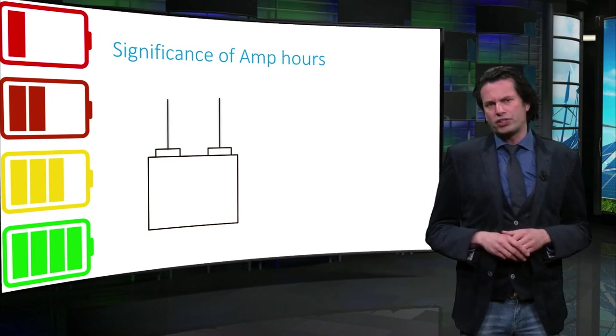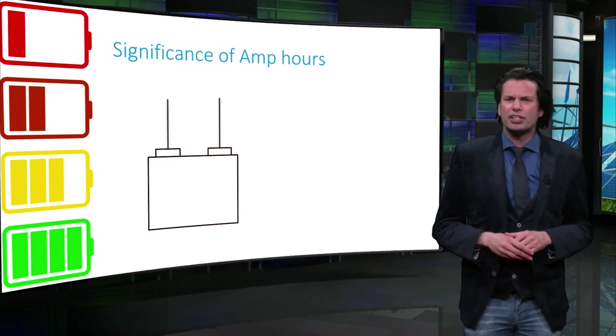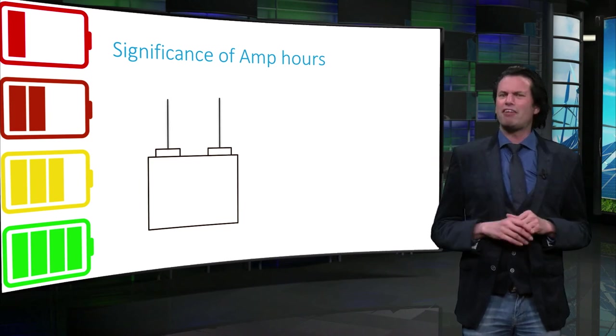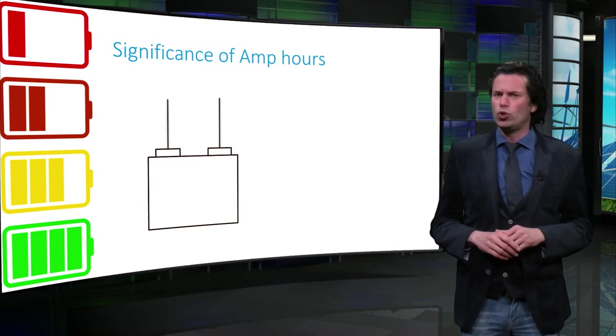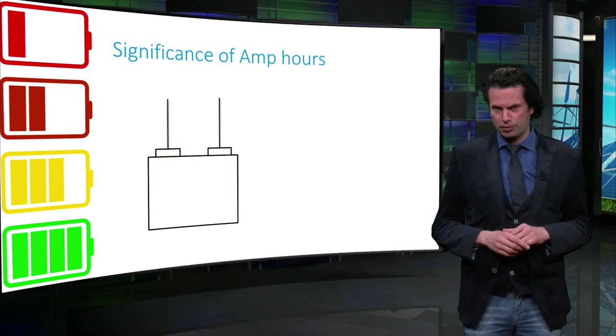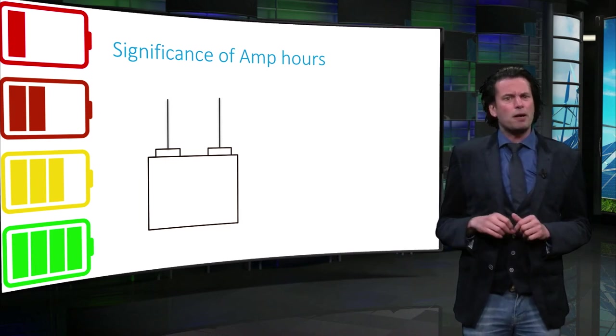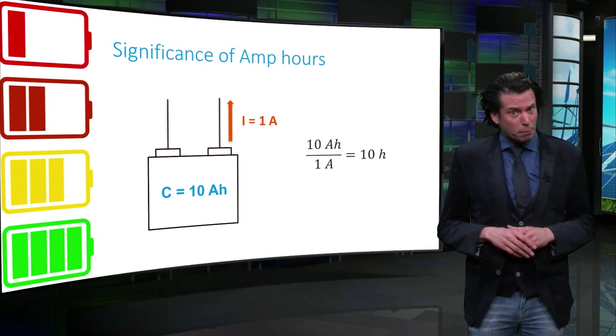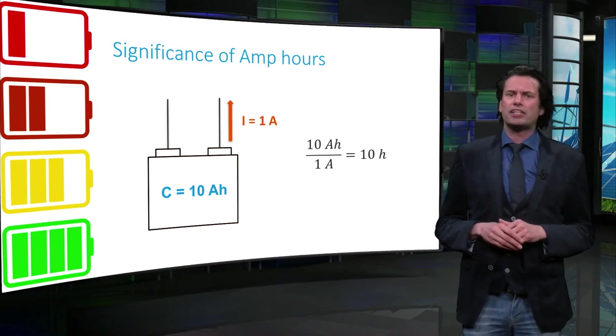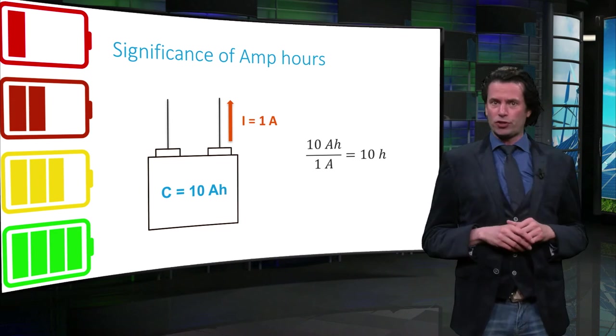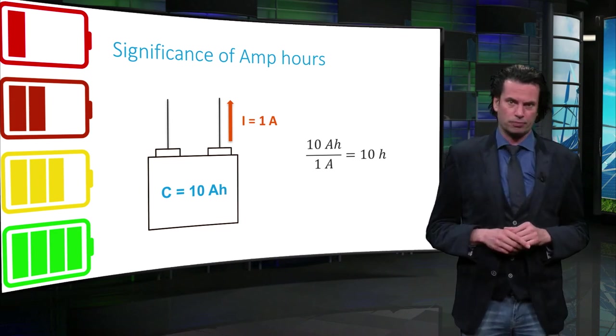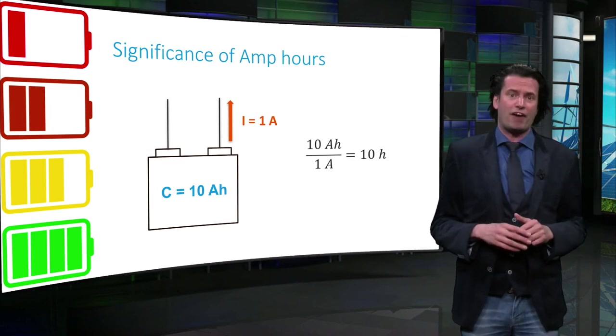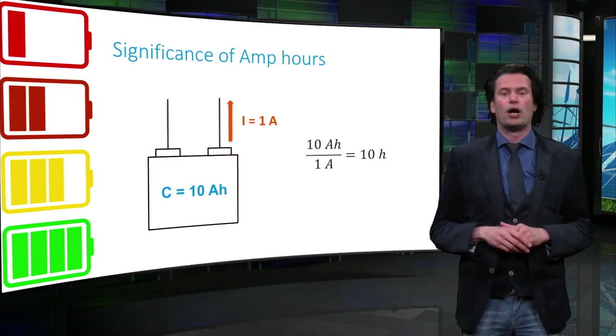You must be wondering what the significance is of amp-hours as the unit of battery capacity. The unit itself gives us some important clues about the battery properties. If we take a brand new battery with 10 amp-hours capacity, it can theoretically deliver a 1 amp current for 10 hours at room temperature. Of course, in practice this is seldom the case due to several factors, as we will see now.